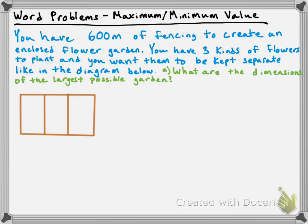You have 600 meters of fencing to create an enclosed flower garden. You have three kinds of flowers to plant, and you want them to be kept separate, like in the diagram below. There are three different sections in this diagram — one section here, a second section here, and a third section here. In each of those sections, we're going to have a kind of flower growing. So the first question is: what are the dimensions of the largest possible garden that you could make?